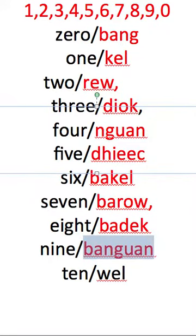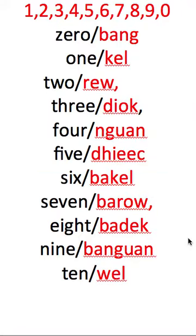Nine, bang one, bang one, ten — well, well. That is how you can count the numbers in an easy way. You don't have to struggle to get them right. Bang, kill, row, joke, one, dh, buckle, borrow, but deck, one one — that's 0 through 10.